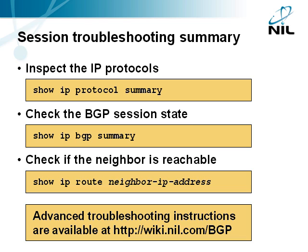To troubleshoot the BGP session state, we've used the following commands. The show IP protocol summary command displays the IP routing protocols running on the router — check the presence of BGP and verify the local AS number. The show IP BGP summary command displays the configured BGP neighbors — check the presence of the PE router in the neighbor list and verify its parameters including the AS number. If the session state is idle, the PE router is not reachable; check the IP routing table with the show IP route command. If the BGP session state remains active, check the local IP address on the WAN link with the show IP interface brief command. If the local IP address is correct, you'll have to perform more complex BGP troubleshooting — find the guidelines in the BGP Resource Center at wiki.nil.com/bgp.